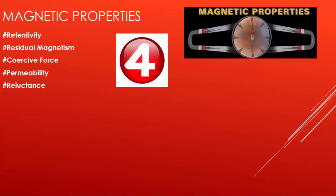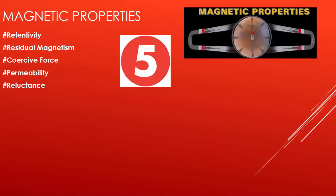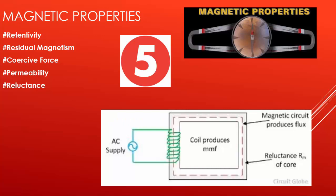Number four is permeability. It is denoted by mu. It describes the ease with which the magnetic flux is established in the component. And at last number five is reluctance. It is the opposition that a ferromagnetic material shows to the establishment of a magnetic field.